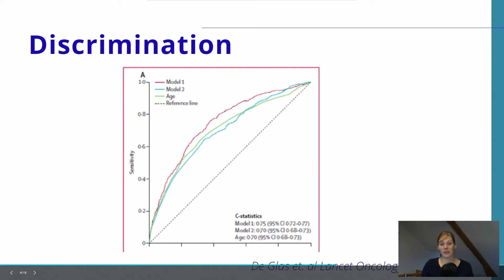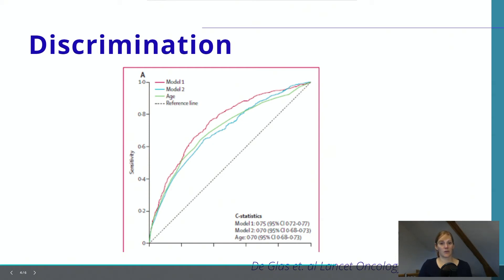When reporting your ROC curve in a paper, you want to calculate the area under the curve, which SPSS does for you. You can see the areas under the curve in the bottom right corner of this example. It's also called the C statistic — AUC and C statistic are used as synonyms. The best possible model has an area under the curve of 1.0, and the worst possible model 0.5 or lower. These models had an area under the curve of 0.7 or 0.75, which is generally considered quite good discrimination for predictive models, since the perfect model doesn't really exist in clinical practice.